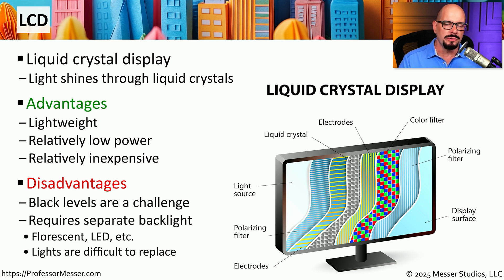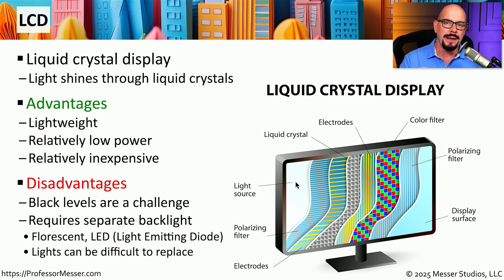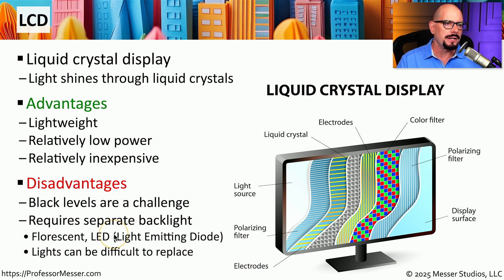Because we're shining a light through polarization filters and color filters, it's somewhat difficult to get a true black color from a liquid crystal display. These displays also require a backlight for us to be able to see information through those polarizing filters and color filters. Without that light, you have a very dim screen that is very difficult to read, and that's why the backlight is so important. On older LCDs, you may see fluorescent lights being used for the backlight, but most modern LCDs will use LED lights, or light-emitting diodes, to produce that light.